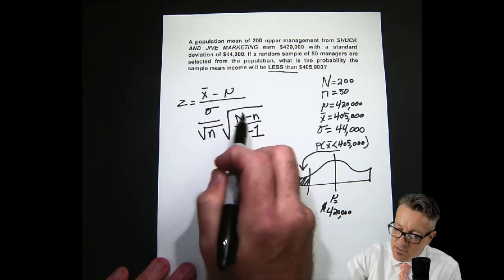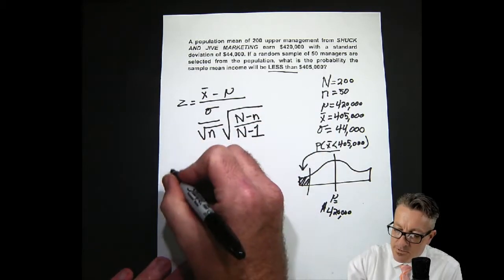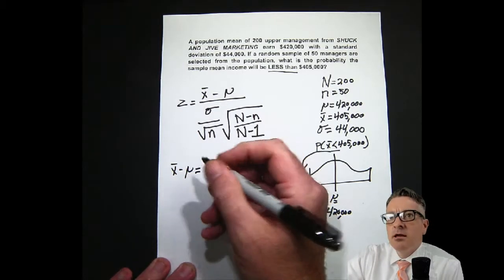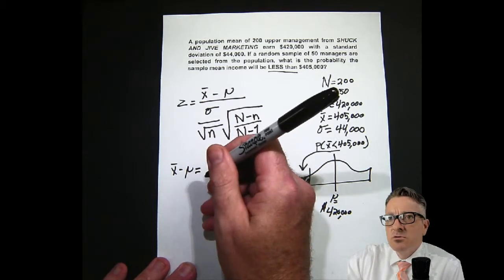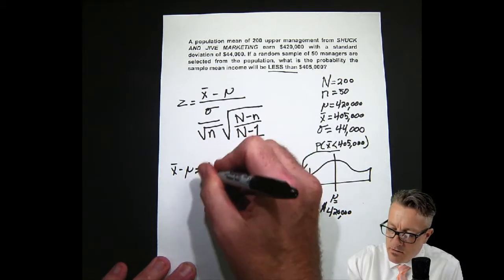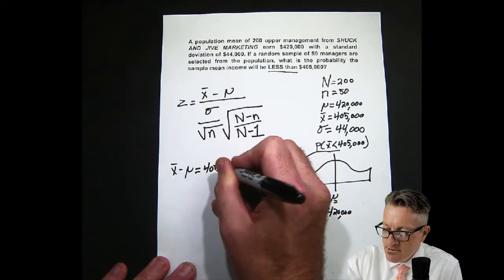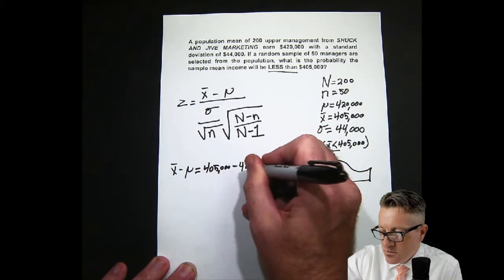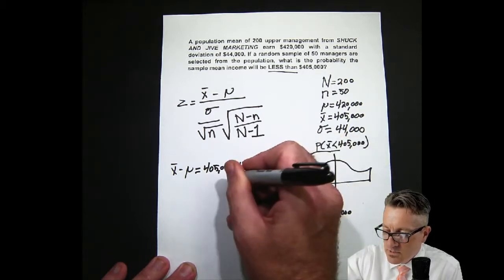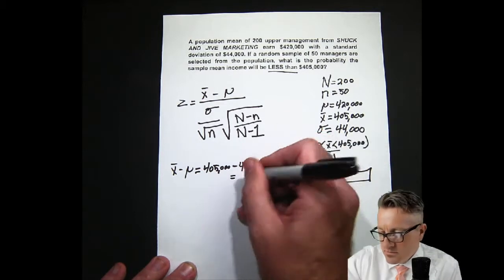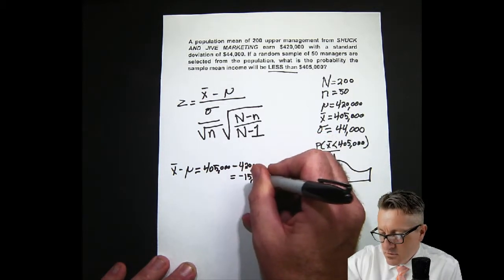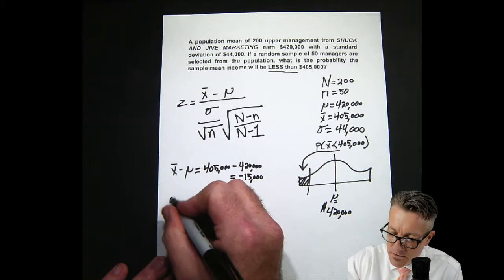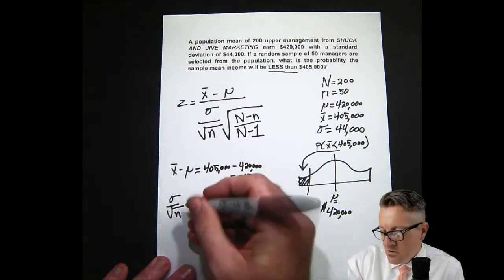We're finding Z. Let's calculate the top: X-bar minus mu. We end up with $405,000 minus $420,000, which gives us negative $15,000. That negative sign is important.